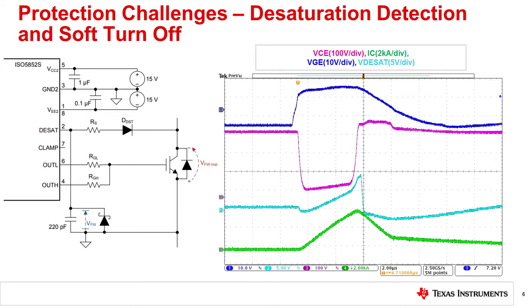The gate emitter voltage can be turned off quickly to prevent overcurrent damage, or slowly with a milliamp level constant current sink to prevent overvoltage damage from the high DiDT and parasitic lead inductance. Desat detection and soft turn-off are standard protection features offered for high reliability isolated IGBT gate drivers today.